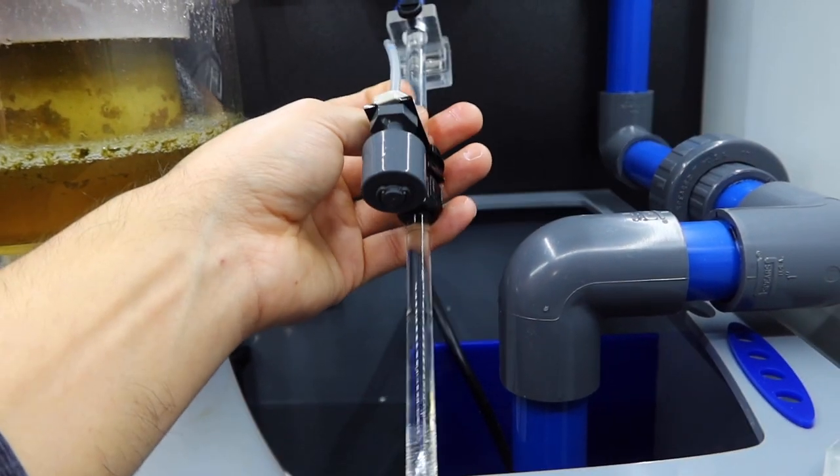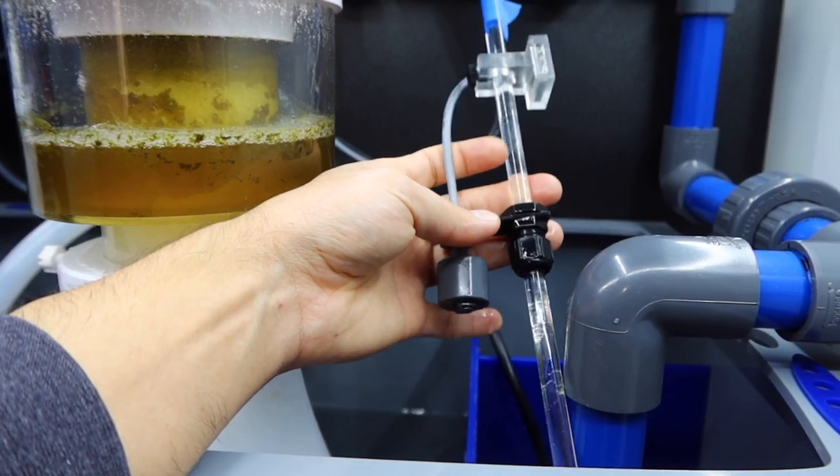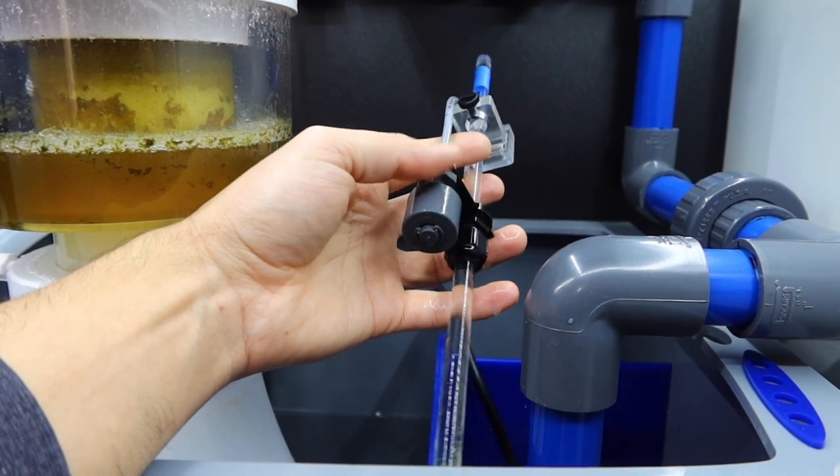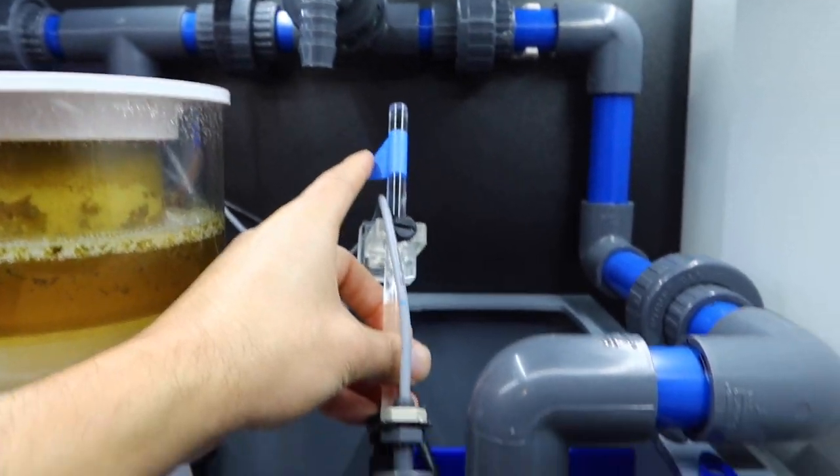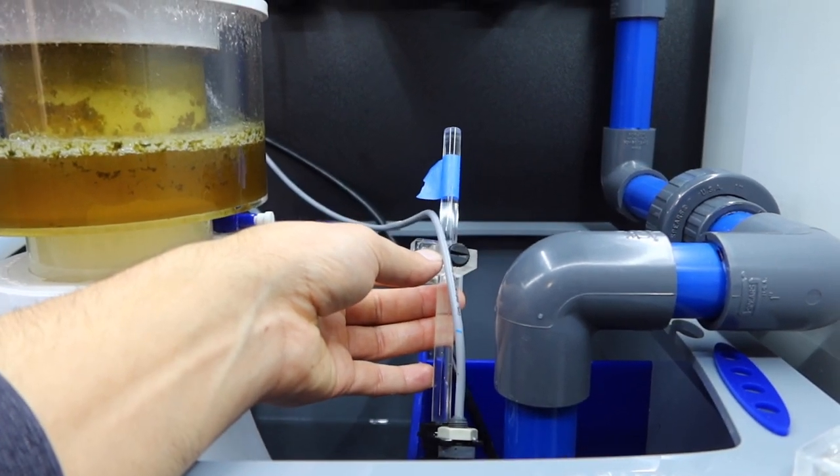In the future I'll probably do two float switches, one for minimum and max. Obviously on the minimum, if it ever got there, the pump would shut off. For today, to keep it simple, I'll show you how I do this one. I need to cut the rod a little bit.